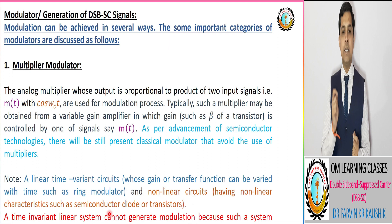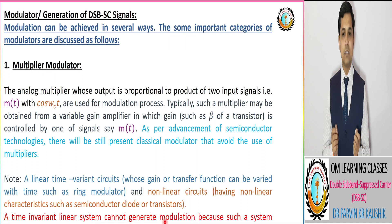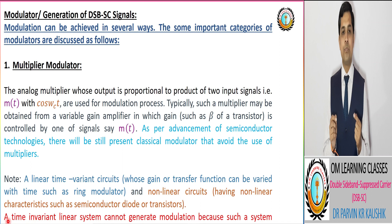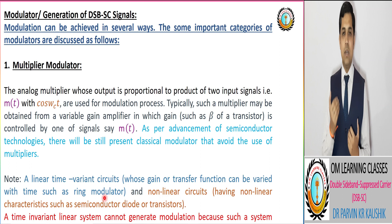The second important thing is that a time-invariant linear system cannot be utilized to generate a DSB-SC signal because such a system cannot provide the frequency change in the output. So the linear time-variant circuit and non-linear circuit are utilized for the modulator circuit of DSB-SC signal.